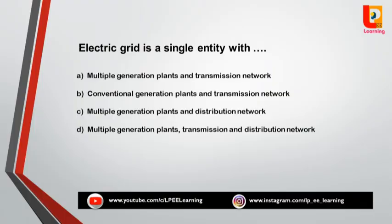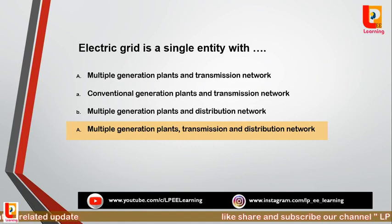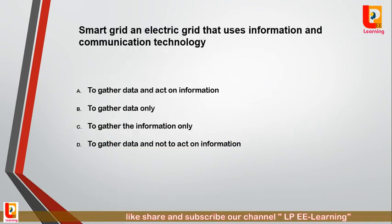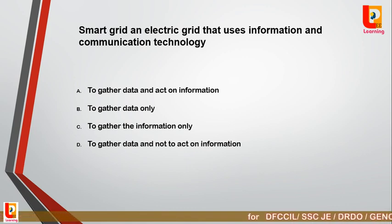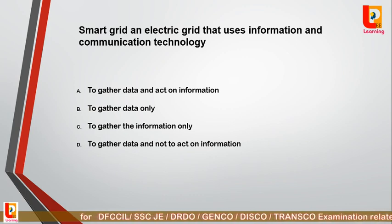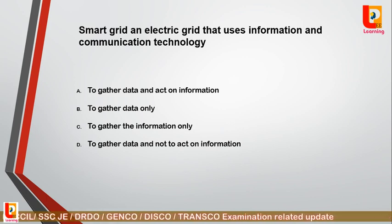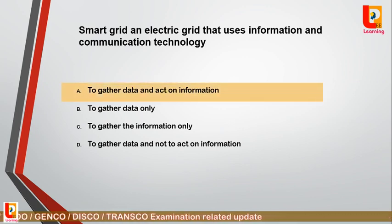Question 1: Electrical grid is a single entity with — option A: multiple generation plants and transmission network; option B: conventional generation plants and transmission network; option C: multiple generation plants and distribution network; option D: multiple generation plants, transmission and distribution network. Correct answer is option D: multiple generation plants, transmission and distribution network. Question 2: Smart grid is an electrical grid that uses information and communication technology — option A: to gather the data and act on the information; option B: to gather the data only; option C: to gather the information only; option D: to gather the data and not act on the information. Correct answer is option A: to gather the data and act on the information.